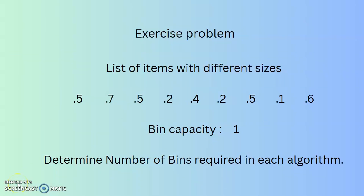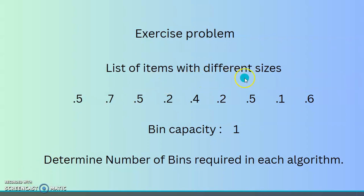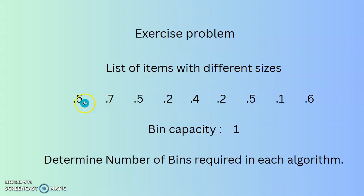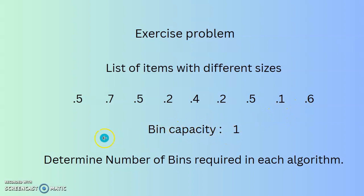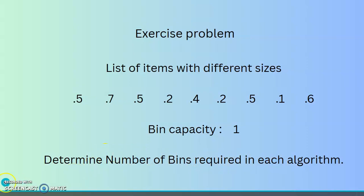Let us solve this exercise problem. The list of items with different sizes is: 0.5, 0.7, 0.5, 0.2, 0.4, 0.2, 0.5, 0.1, and 0.6. The bin capacity is 1. We should determine the number of bins required using each algorithm.